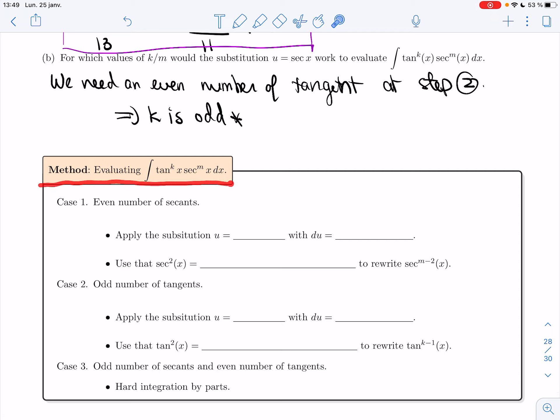So the method for evaluating tan to the k, secant to the m is very close to the one for sine and cosine. If you have an even number of secant, you should apply the substitution u equals tan. And then du will take two of these secants out of play, and then you'll have an even number left. You'll have m minus 2 left. And so secant squared is gonna be replaced by tan squared of x plus 1. So that's an even number of secant, so m is even. If it's an odd number of tangent, you apply the substitution u equals secant x. Du is secant x tan of x dx. And you're gonna use that tan squared is secant squared of x minus 1 to rewrite tan to the k minus 1.